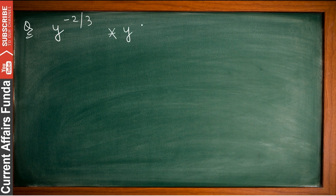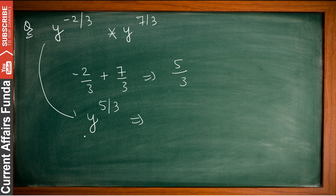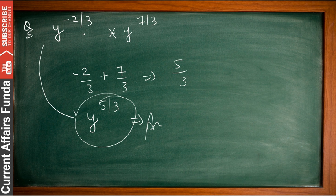Another question: y to the power minus 2 by 3, multiplied by y to the power 7 by 3. Add the indices: minus 2 by 3 plus 7 by 3 equals 5 by 3. So applying the power 5 by 3, the answer is y to the power 5 by 3. You can further simplify if you want; otherwise this is the simplified form of fractional indices.